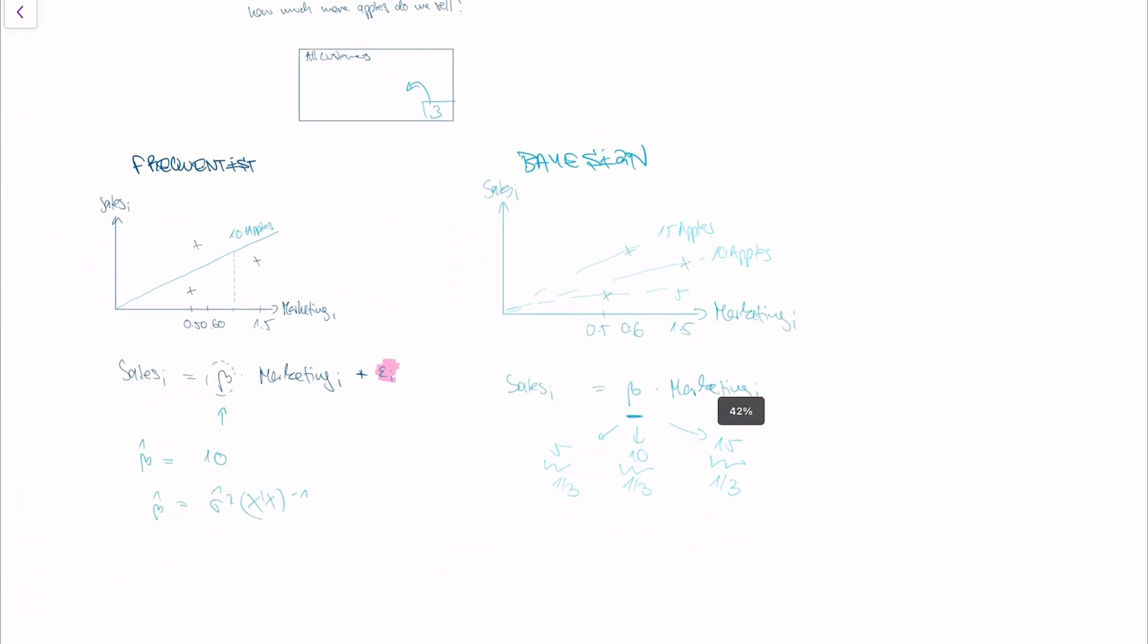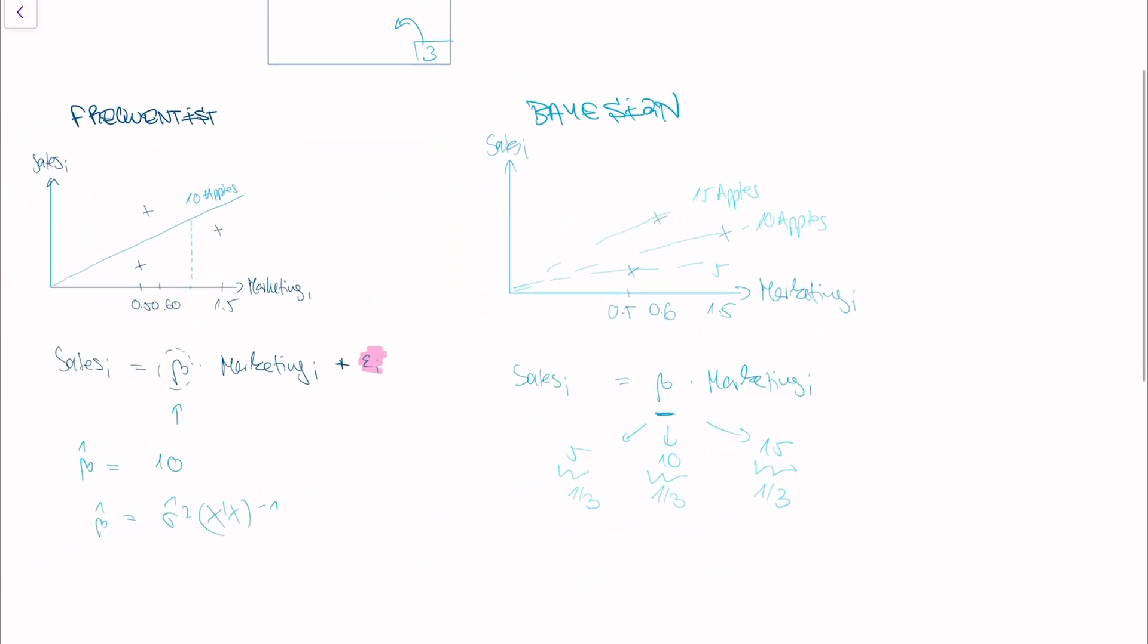And you see a crucial difference here that the frequentist statistician would give you one value, a true value. But the Bayesian statistician doesn't say that there's a true value. He just says there's a distribution.